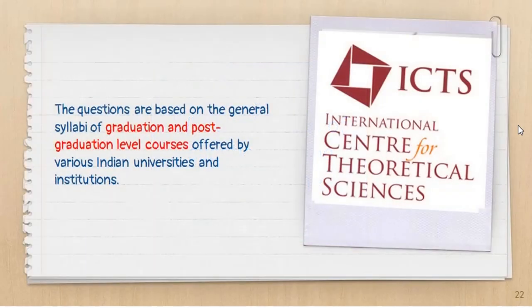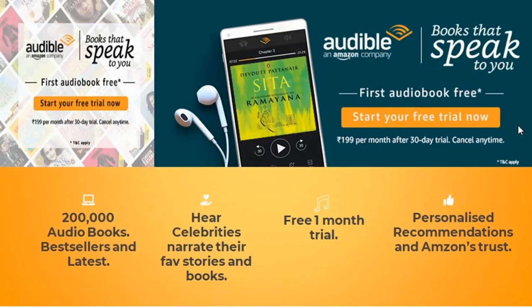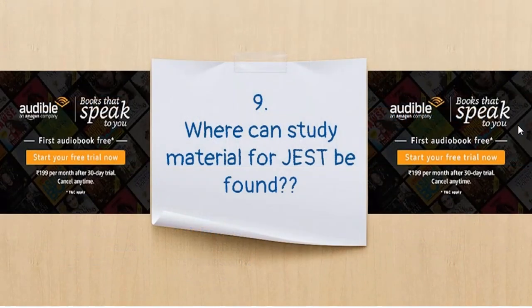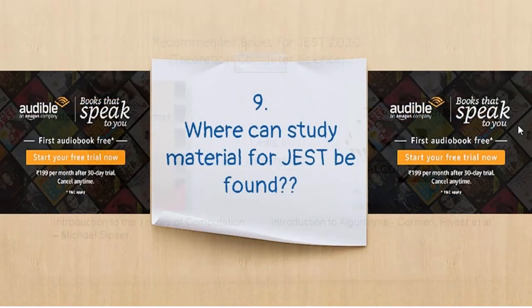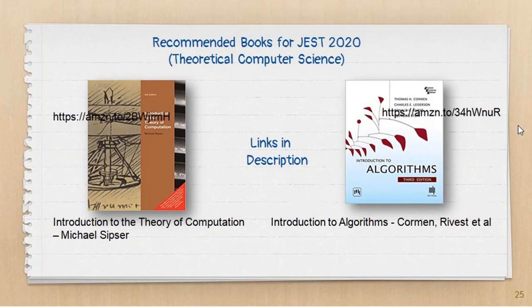Another important question is where you can find study material for JEST. Here are some of the recommended books for the theoretical computer science paper. You can buy them from the links given in the description — they are available on Amazon.in.